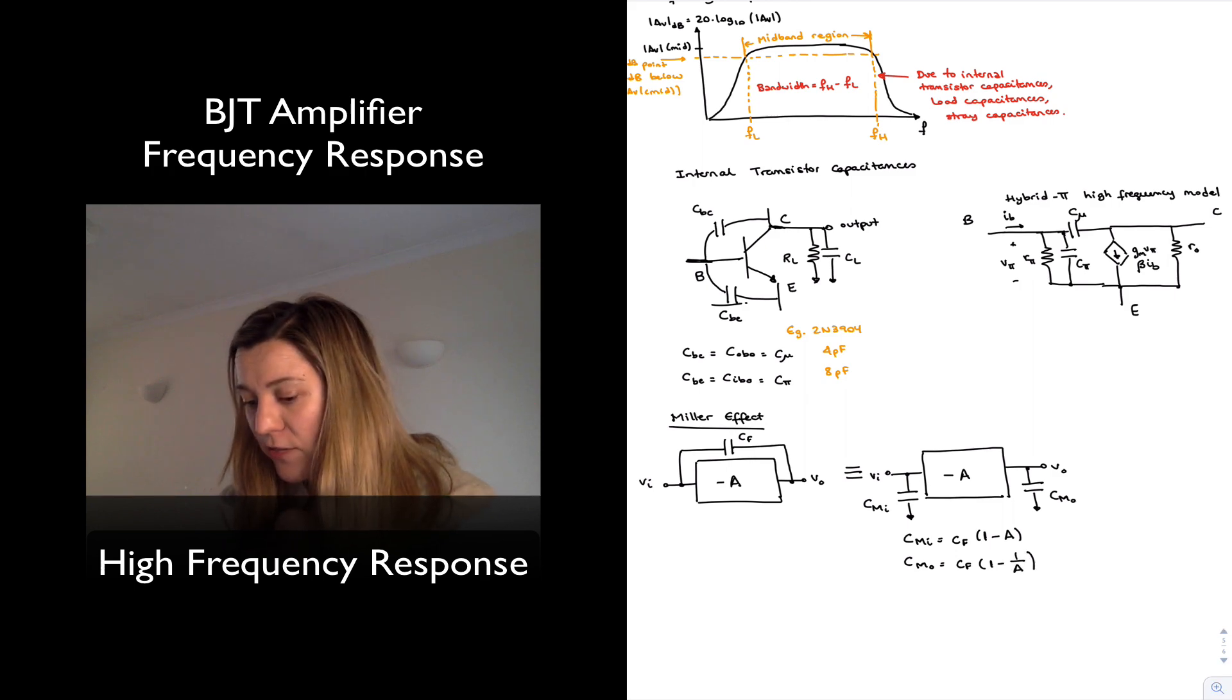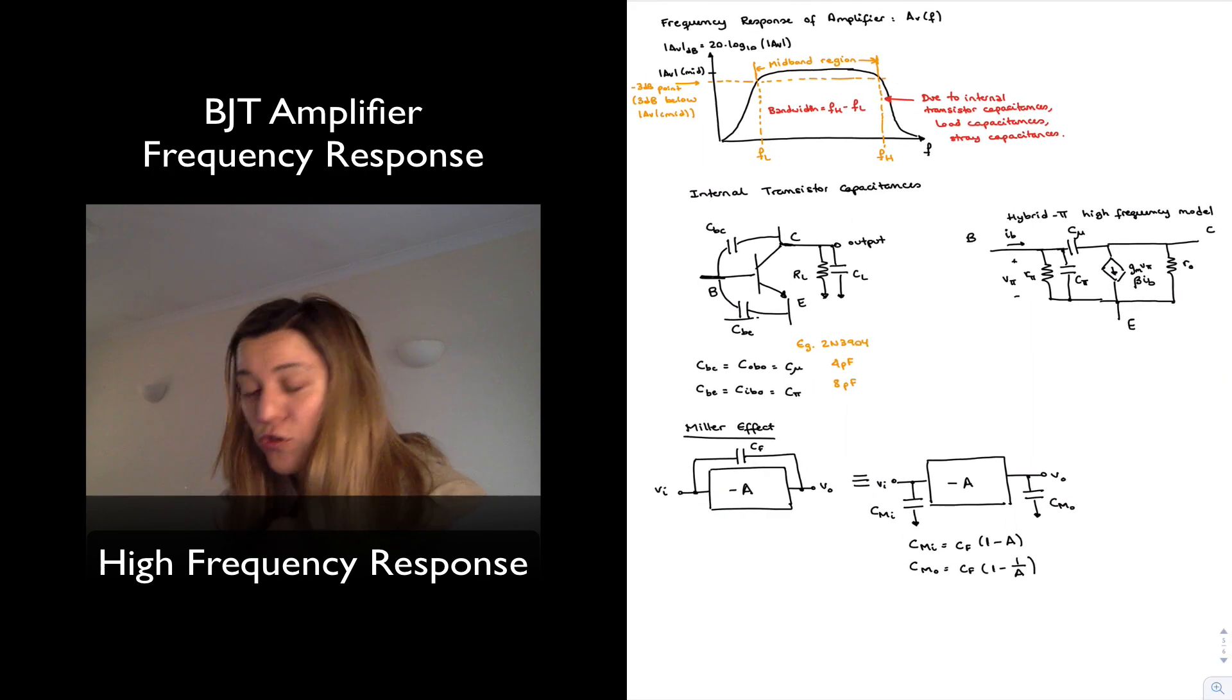Now those are the generic formulas, and normally you consider A to be the value of the gain. Here I've represented negative A, so it's going to mess up my equation. So I'm actually going to just represent this as A...